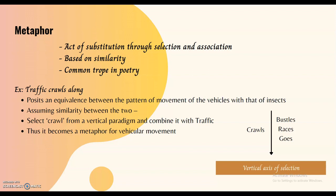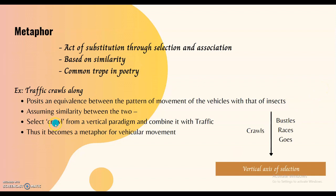Let's take a look at metaphor. Here we substitute a word with another through the process of selection, based on the similarity principle — a commonly used trope in poetry. For example, to describe traffic, I can choose words like 'bustle' or 'race' from the vertical axis of selection. If I find the traffic to be very slow and choose the term 'crawl,' saying 'the traffic crawls along,' I am drawing an equivalence between the movement of vehicles and that of insects. I have selected 'crawl' and combined it with 'traffic' — thus 'crawl' becomes a metaphor for vehicular movement.